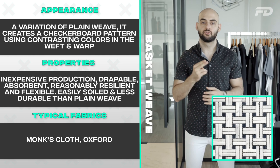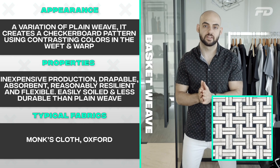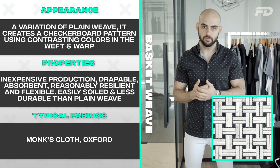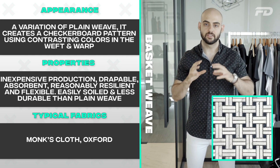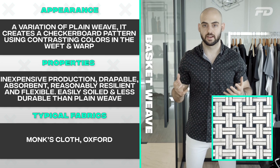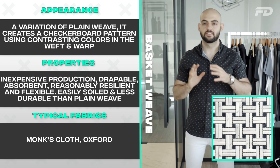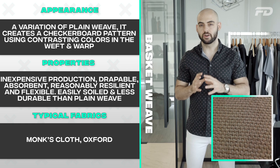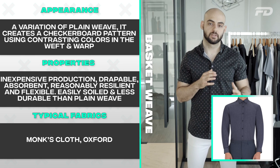Next up is the basket weave. The structure involves interlacing two or more warp yarns with two or more weft yarns to create a balanced basket-like structure. It's a variation of the standard plain weave and typically creates an attractive checkerboard pattern. You can accentuate the checkerboard look using contrasting color yarns for either the weft or warp. As for properties, it's still inexpensive to produce, very drapeable, and quite absorbent, though it's more easily soiled and less durable than a plain weave.